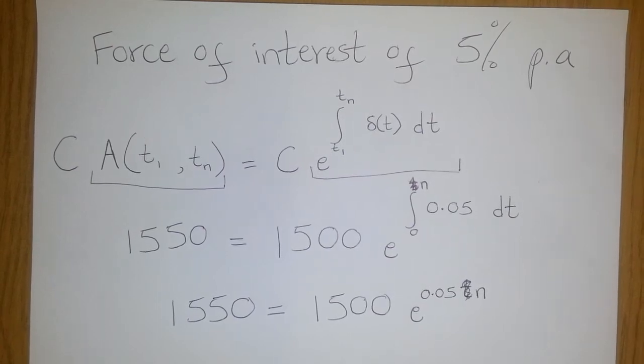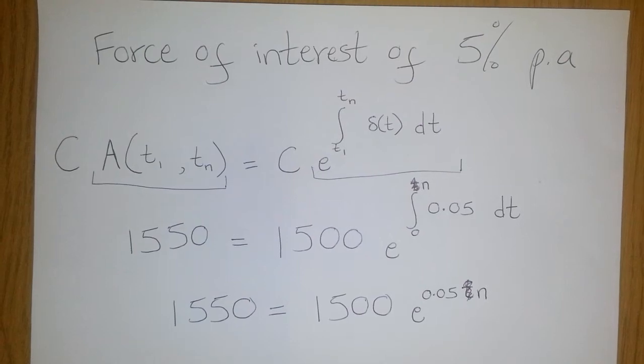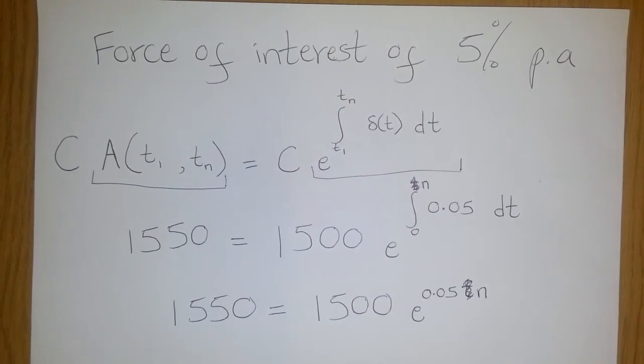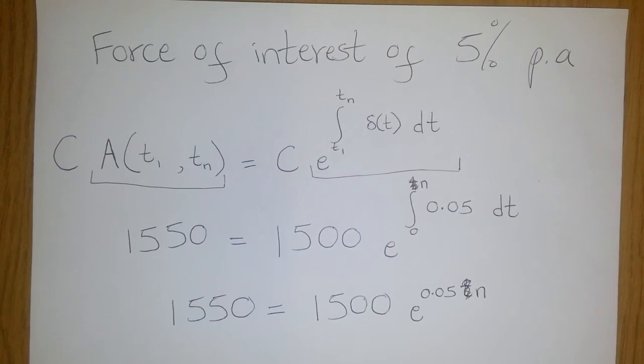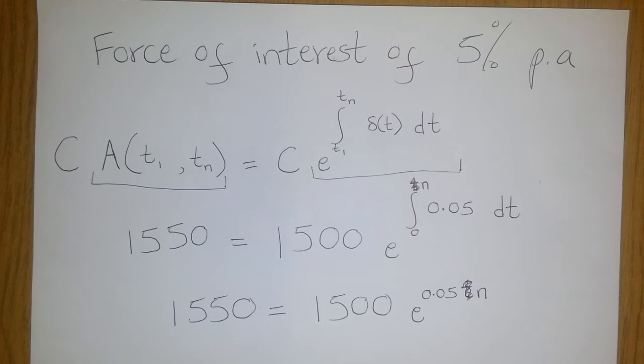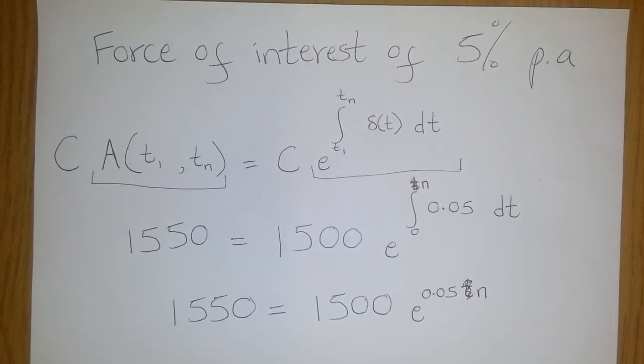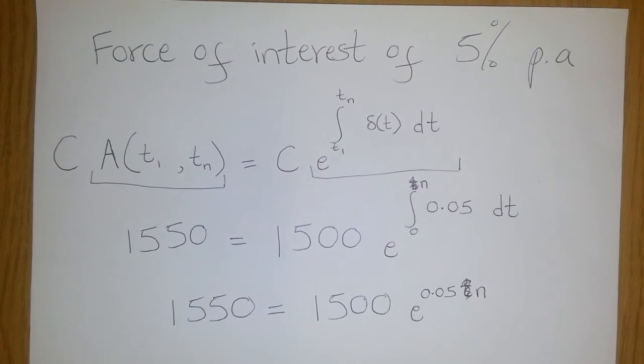Now, we know that if we are given an amount of money at the beginning of time, let's say time 0, and we are asked to find what it is going to accumulate to at the end of a certain period of time.